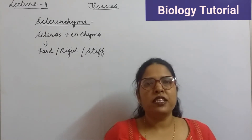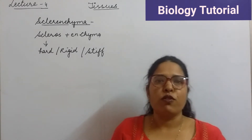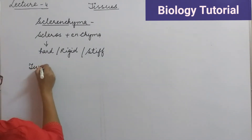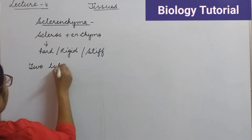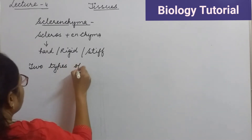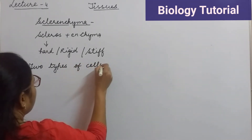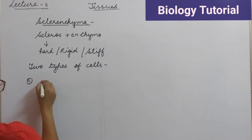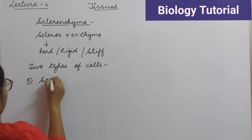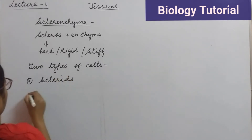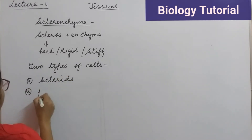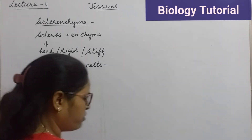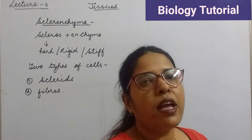Sclerenchyma tissue is basically made up of two types of cells. The first one is sclerids, and the second one is fibers. These are the two important types of cells present in sclerenchyma tissues.